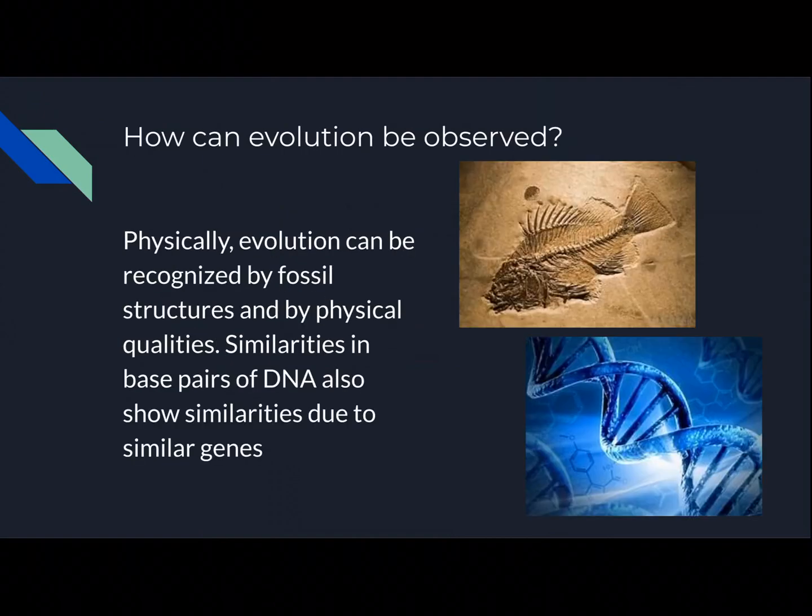How can evolution be observed? Physically, evolution can be recognized by fossil structures and by physical qualities. Genetically, similarities in base pairs of DNA show more accurate similarities between species.